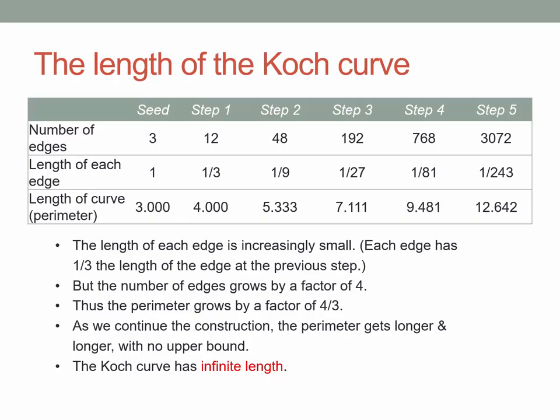The length of each edge is increasingly small — each edge has one-third the length of the edge at the previous step — but the number of edges grows by a factor of four, so the perimeter grows by a factor of four-thirds. What's happening to the length of the curve? It's getting longer and longer and longer, with no upper bound. As we multiply by four-thirds infinitely often, we get a sequence marching off to infinity. The only reasonable interpretation is a curve which has infinite length. Unlike a straight line or parabola, the Koch curve is bounded — it fits on a single picture — yet it has infinite length.